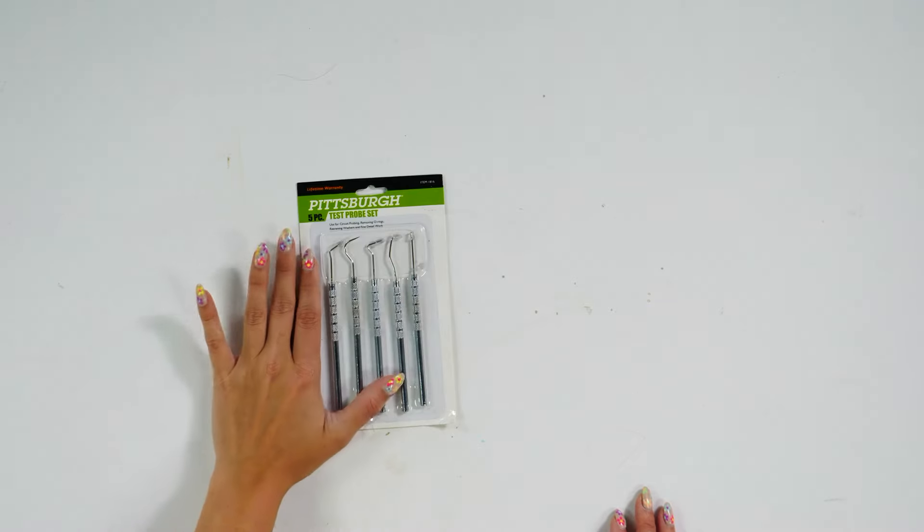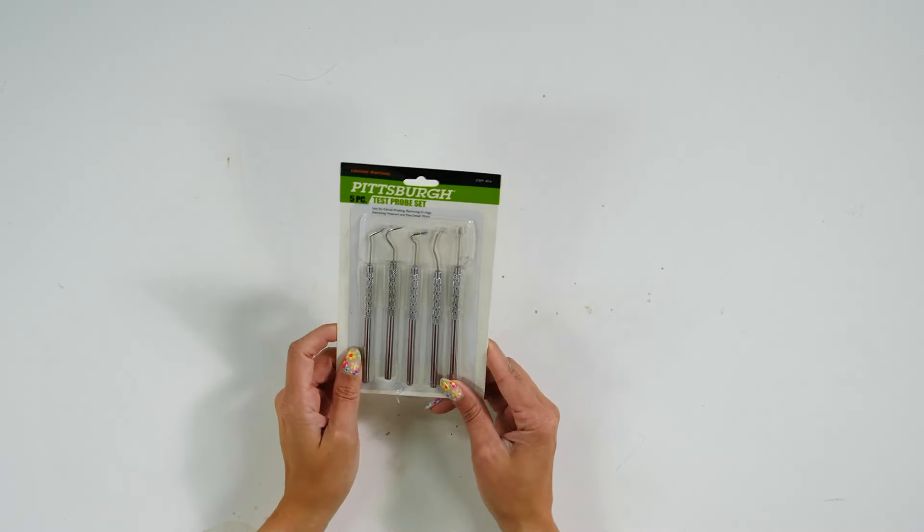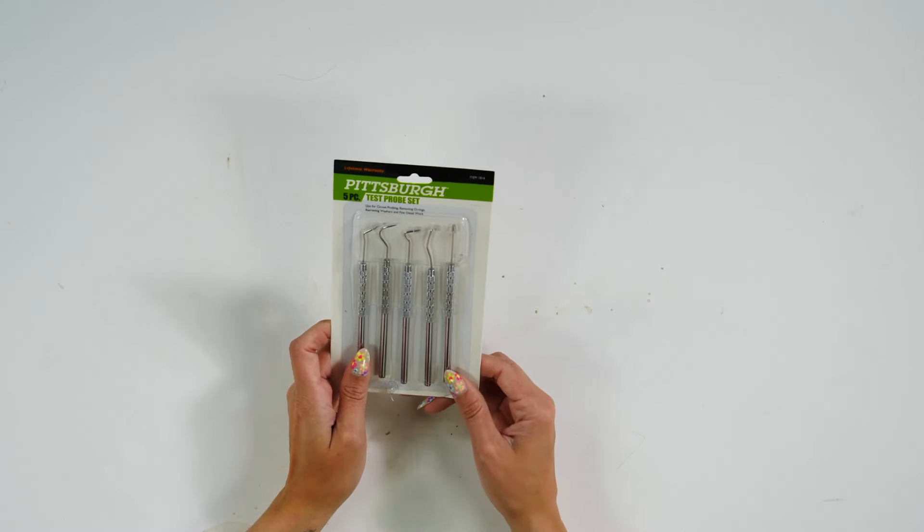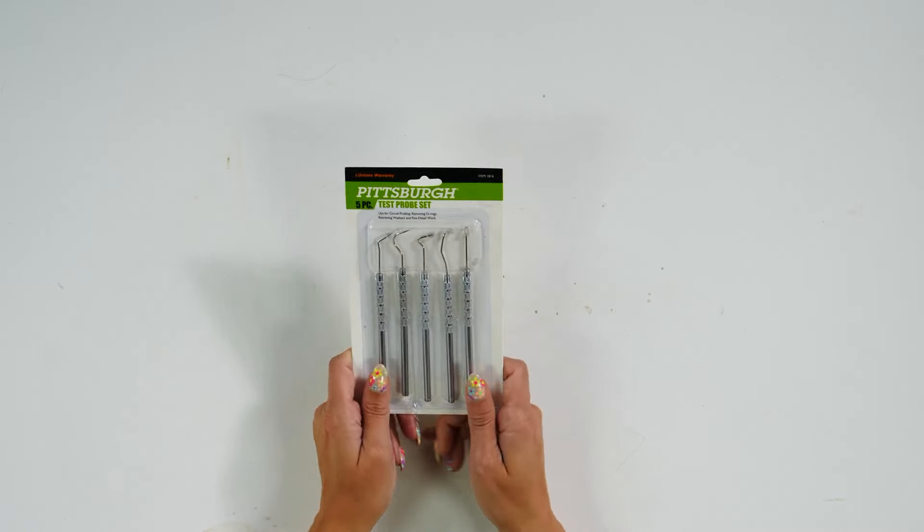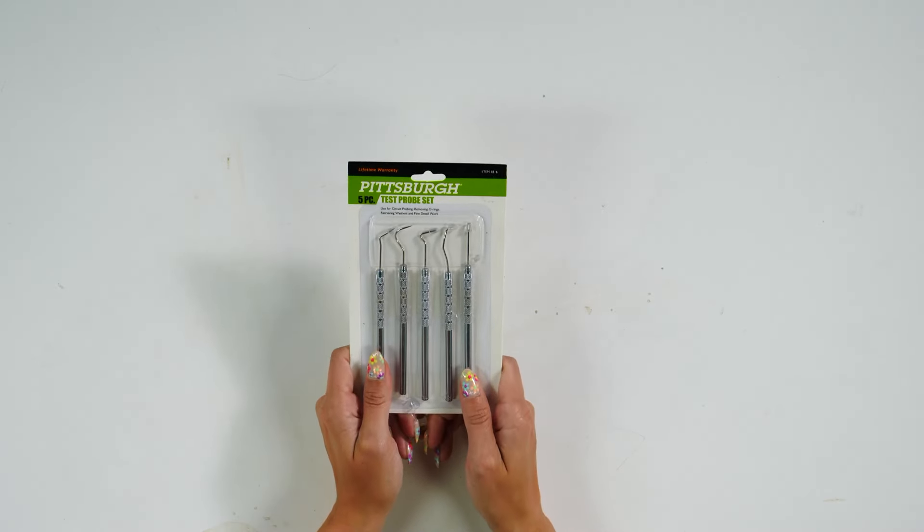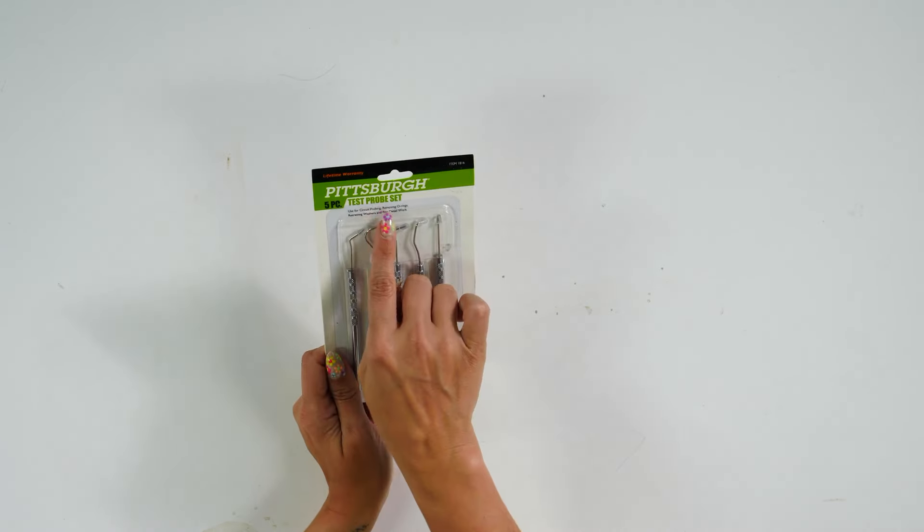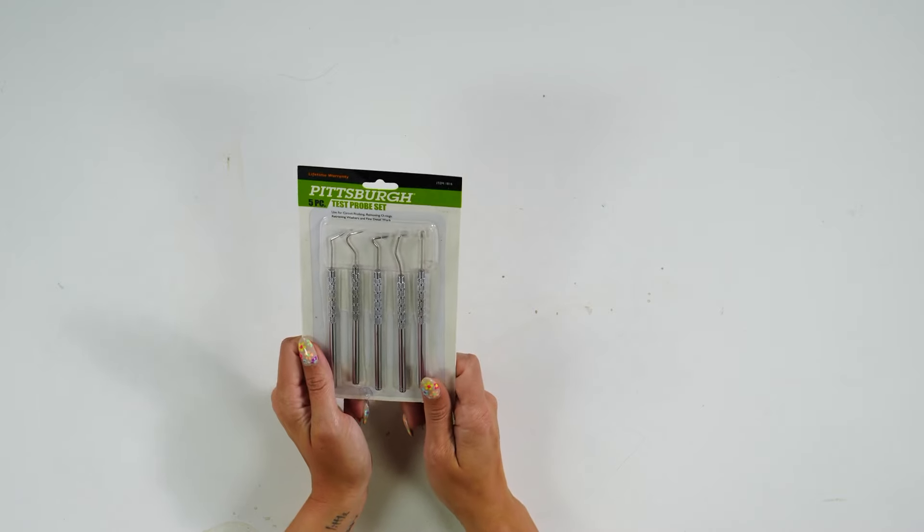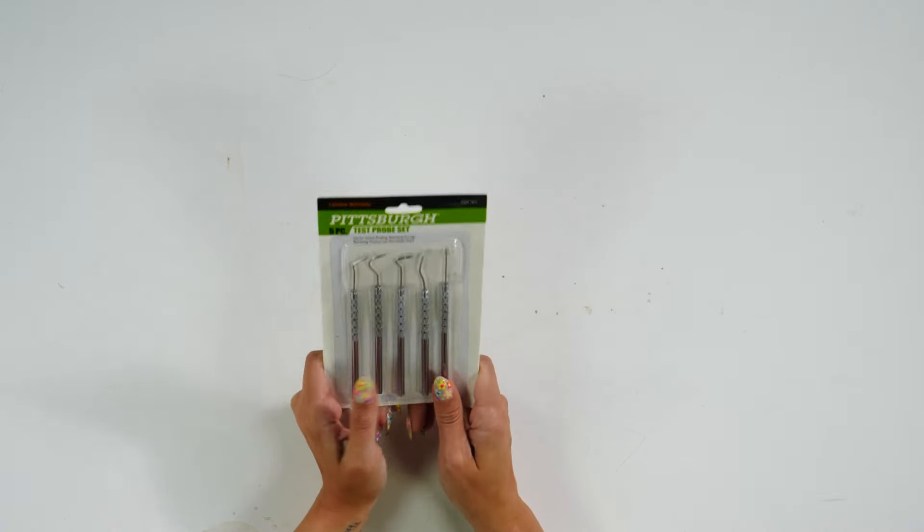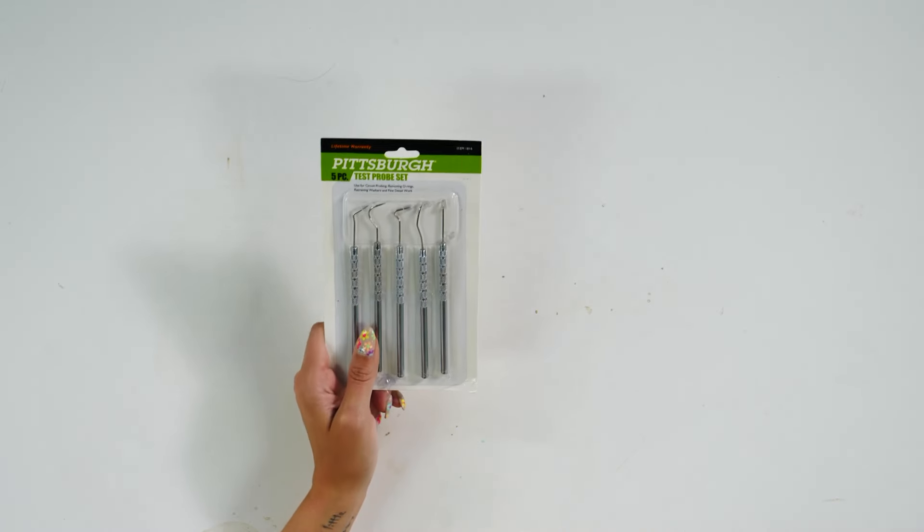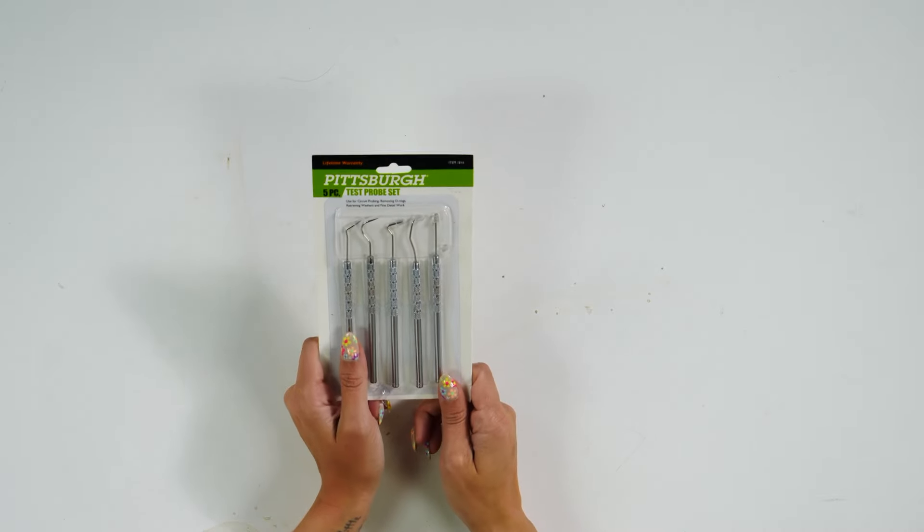Now the last thing is actually found with the automotive stuff, if you can believe it, and that is this five piece test probe set. These are actually great tools to use for weeding, and not only that, but they're a quarter apiece because you get five tools in this. They have different angles so you can pick which angle you like the best. This is definitely one that you need to get the next time you're in Dollar Tree to use for weeding.